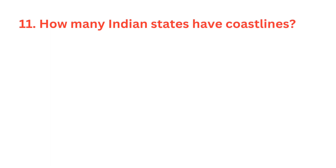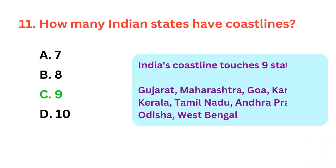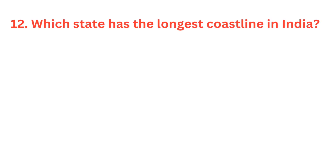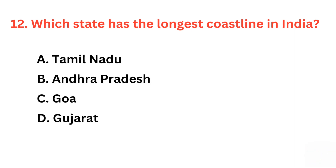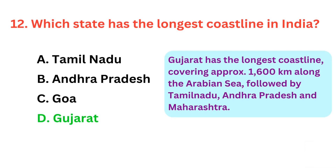How many Indian states have coastlines? The correct answer is option C, 9 states. Which state has the longest coastline in India? The correct answer is option D, Gujarat.